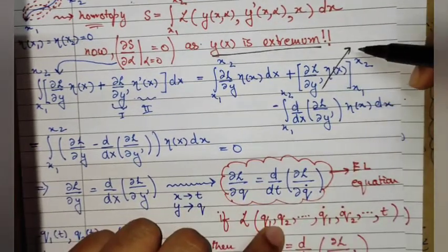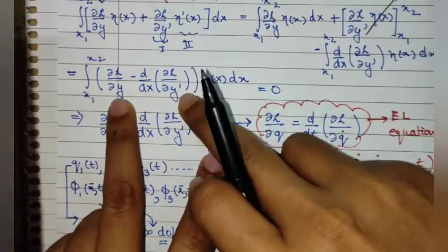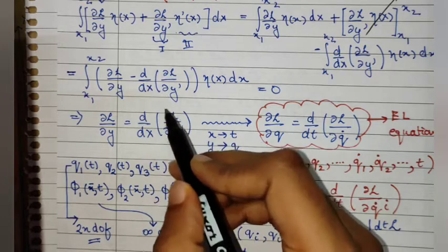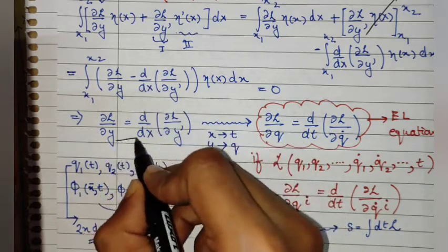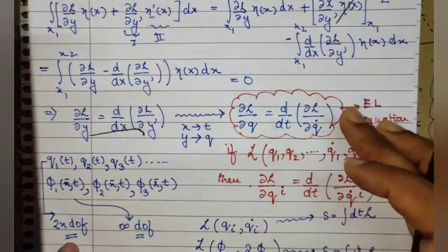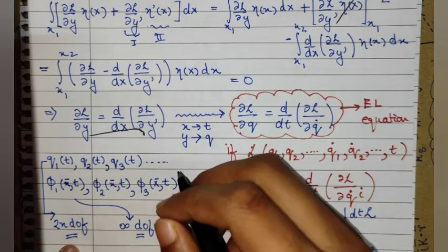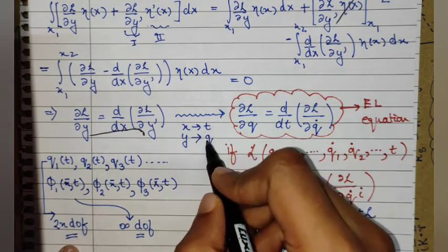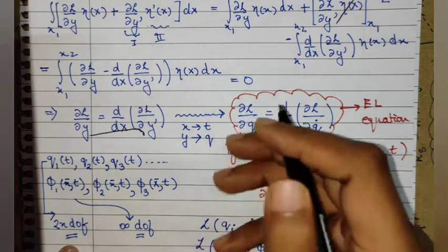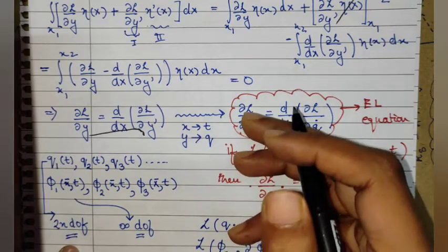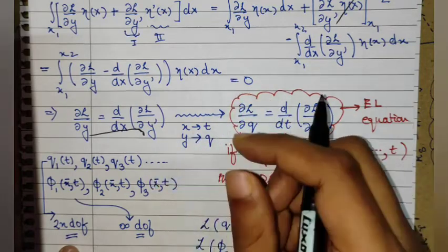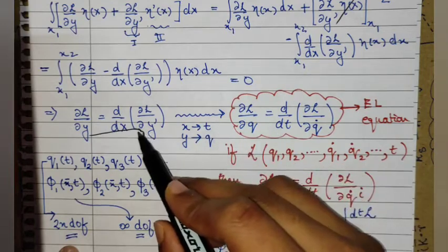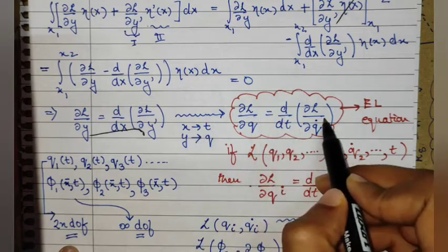After the boundary terms drop out, the integrand takes a specific form, and we set it to zero for y(x) to be an extremum. This gives us the Euler-Lagrange equation in its general form, with no reference yet to what y or x physically represent. If we identify x as time and y as a generalized coordinate — which can be the angle theta of a pendulum or the position of a free particle — then substituting yields the Euler-Lagrange equation in the familiar form.